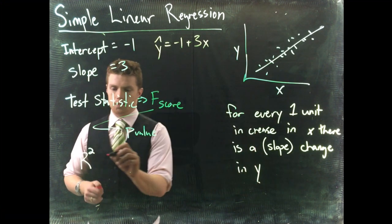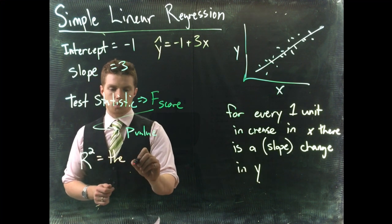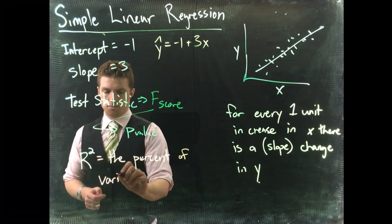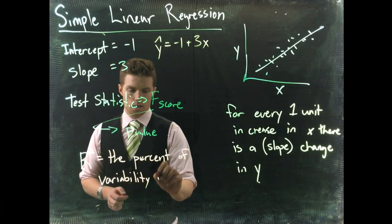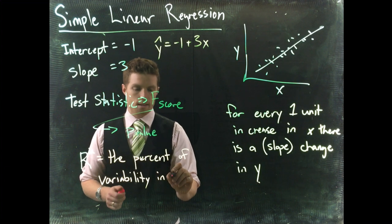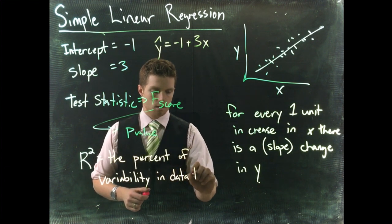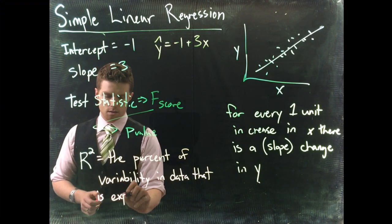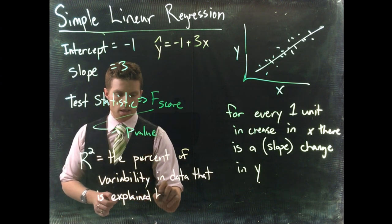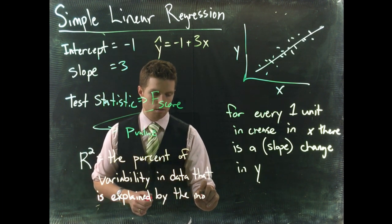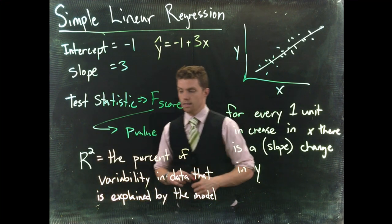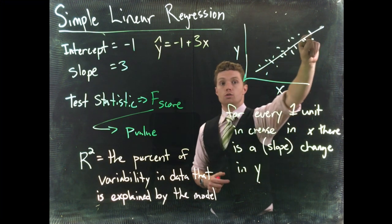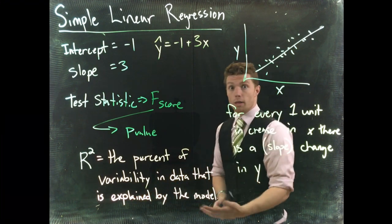Now, r squared specifically tells us this is the percent of variability in the data that is explained by the model or this basically says, like what percent of the variability in the data is explained by the model? If the data points are really close to the line, it means that most of the variability in the data is explained away by the model. That's a good thing.